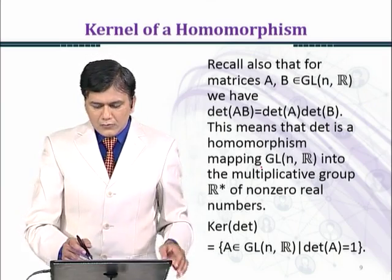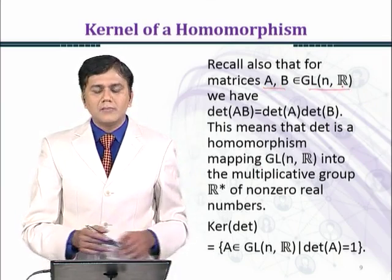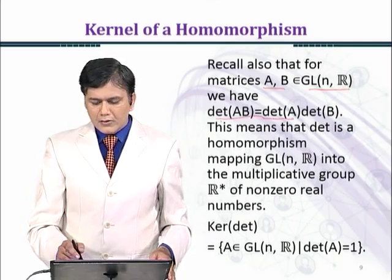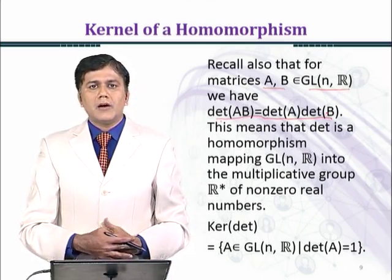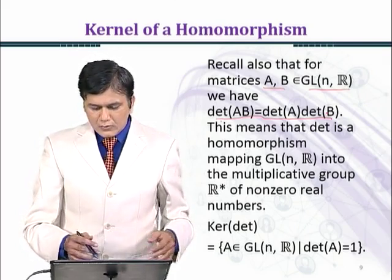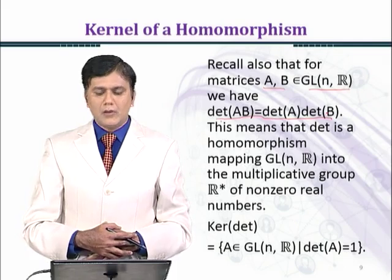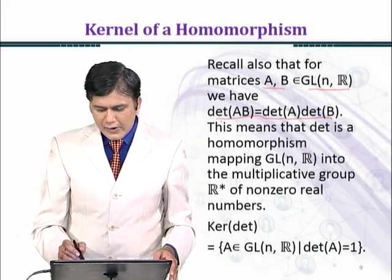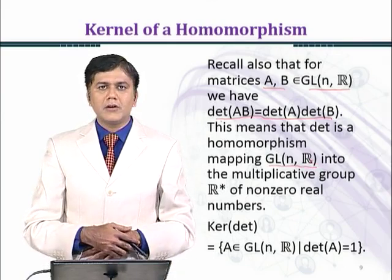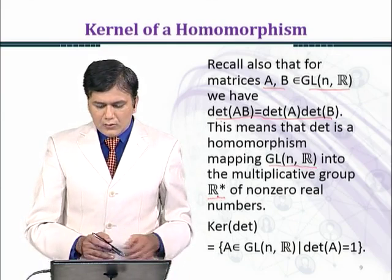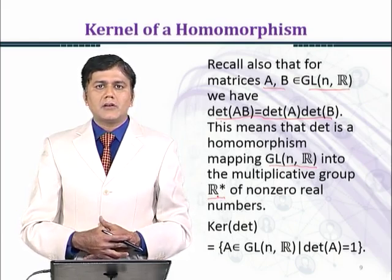Recall also that for matrices A, B belonging to GL(n,R), we have det(AB) = det(A) · det(B). This property, which we studied in linear algebra, implies that the determinant map is a homomorphism. This means that the determinant is a homomorphism mapping GL(n,R) into the multiplicative group R* of non-zero real numbers.